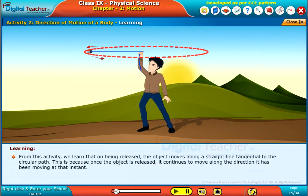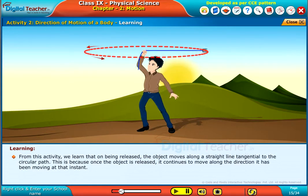From this activity, we learn that on being released, the object moves along a straight line tangential to the circular path.